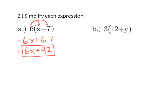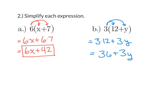Let's do it again on the next one: 3 times (12 + y). It doesn't matter the order they come in — we're still going to distribute the number on the outside to every term on the inside. So we do 3 times 12 plus 3 times y. 3 times 12 is 36 and 3 times y is 3y, so that's our simplified expression.